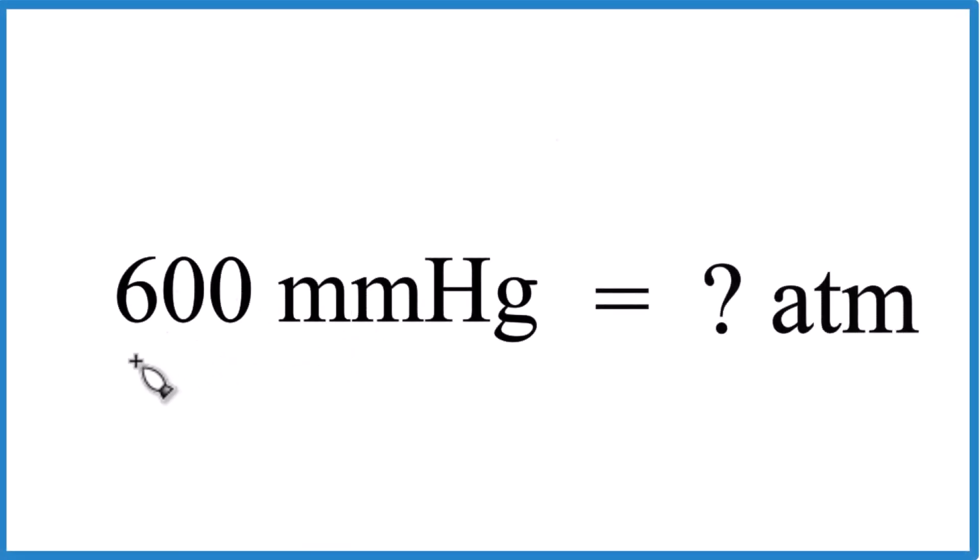So if you need to figure out how many atmospheres we have when we have 600 millimeters of mercury, here's how you do it.